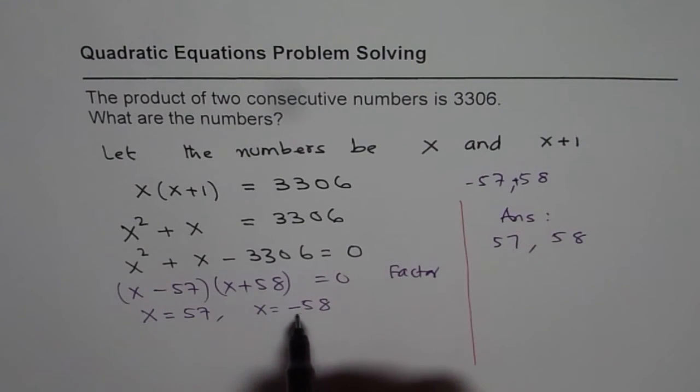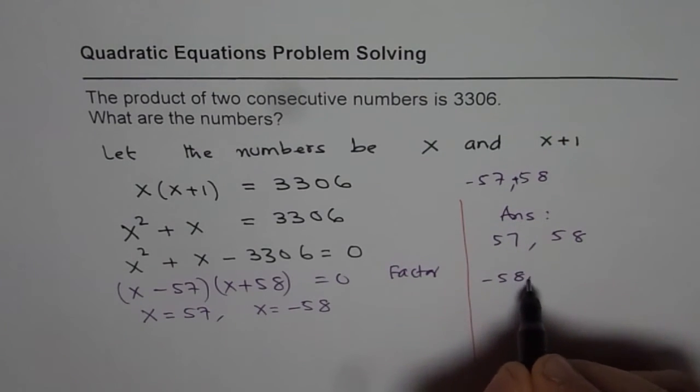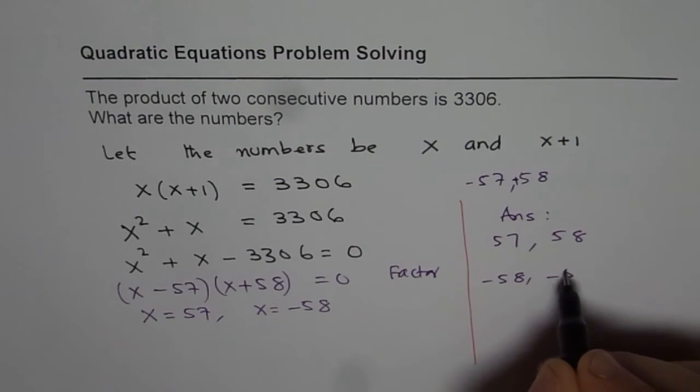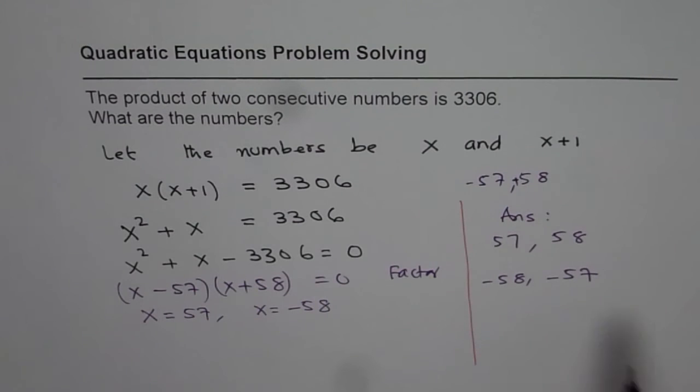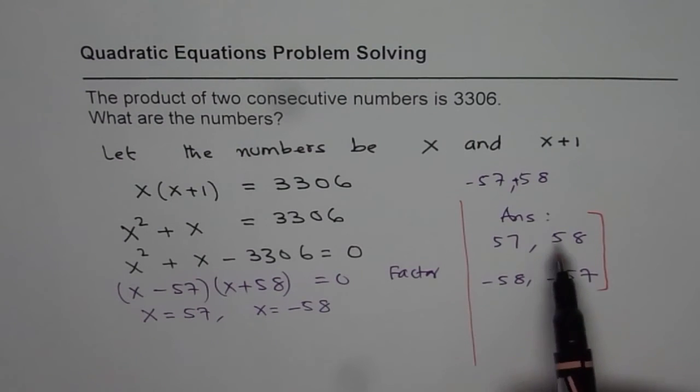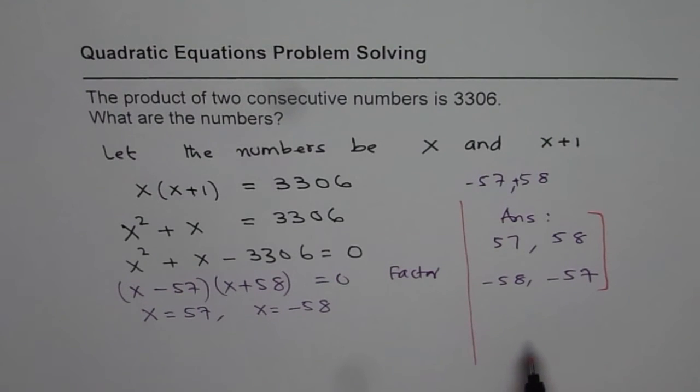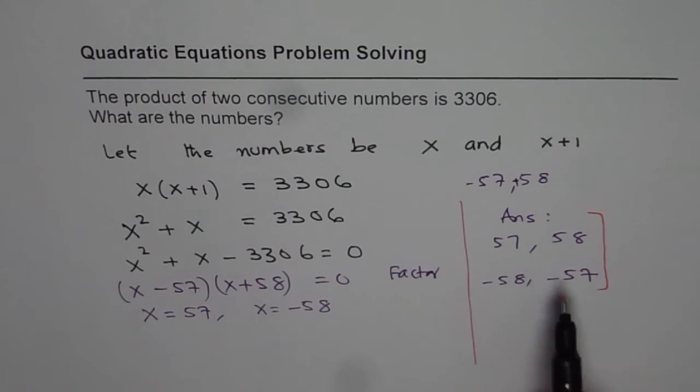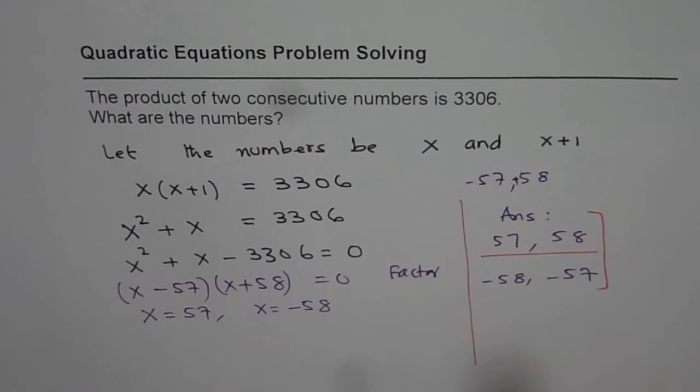But if x is minus 58, then the numbers are minus 58 and minus 57. So we actually get two sets of numbers. And this is for my students to understand that in this question, we are not saying integers or anything, nor are we saying natural numbers, so you should actually report both the answers. That's the idea.